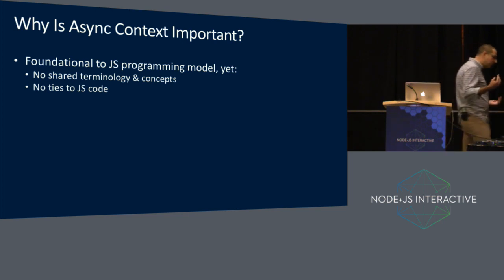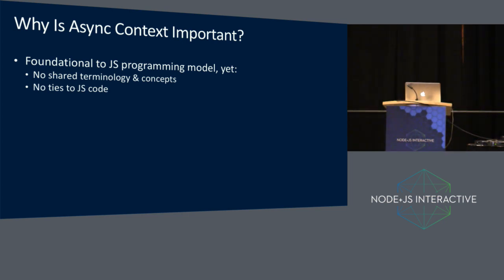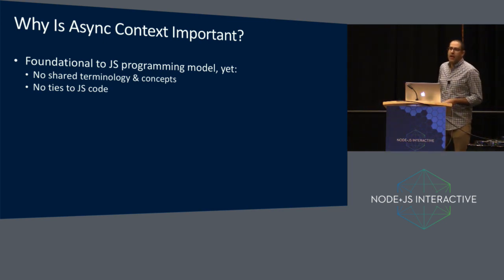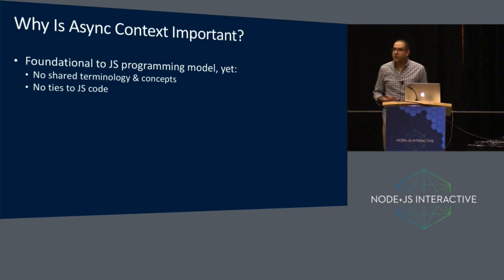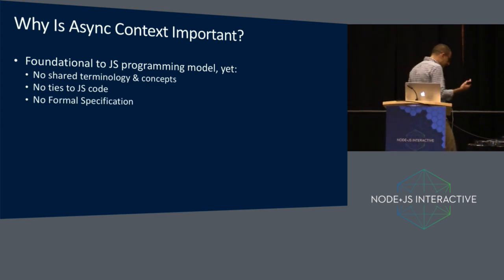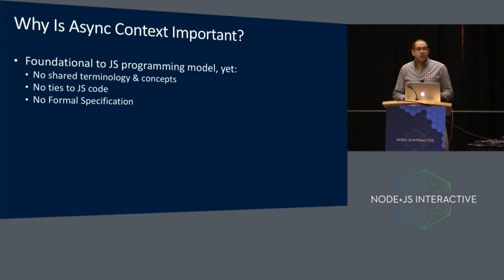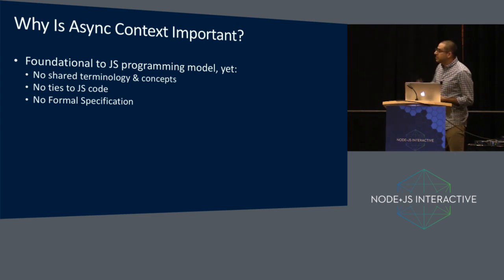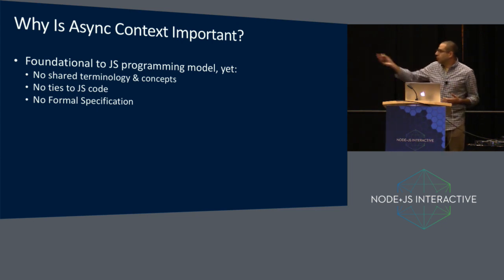There's no tie-in to JavaScript source code, which means that somebody reading code has to understand the APIs and understand where these asynchronous boundaries are at the API level, with no syntactic tie-ins giving the reader further understanding. There's no formal specification, so depending on where you are in the stack, you may make assumptions and get broken by somebody below you. There's a recent example — there's a solution inside of Node.js today, and a recent optimization in V8 broke what was happening up the stack.